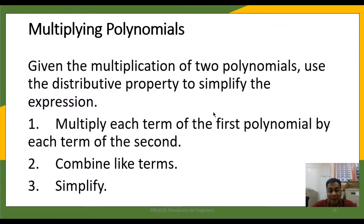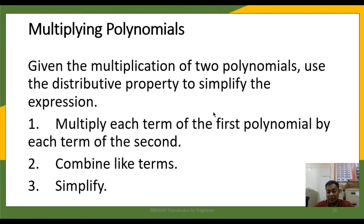For this video we are going to talk about multiplying polynomials, so we are going to use the distributive property to simplify expressions when we are multiplying two polynomials. We need to multiply each of the terms in the first polynomial to each of the terms in the second polynomial, and then we are going to combine like terms and simplify.